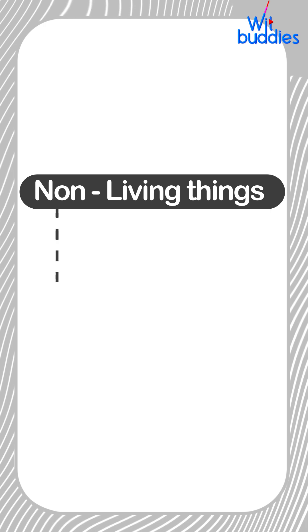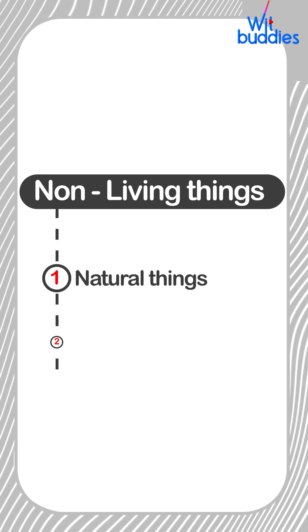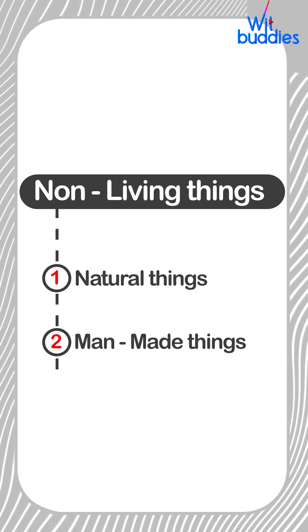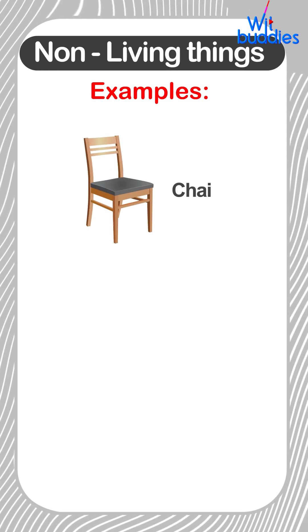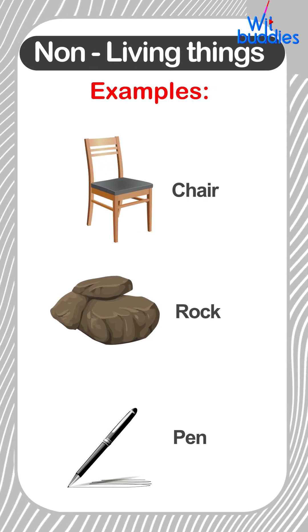Non-living things have two types: one, natural things, and two, man-made things. Examples include chair, rock, pen, etc.